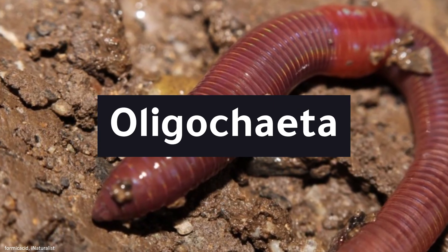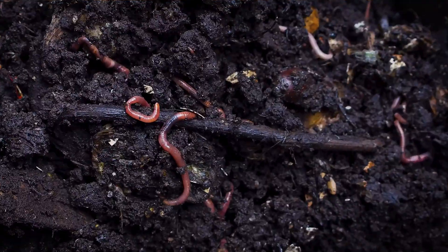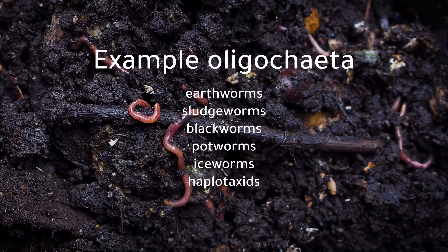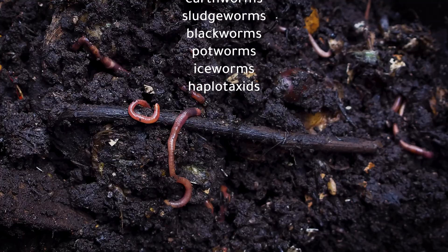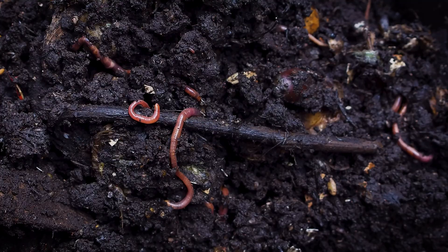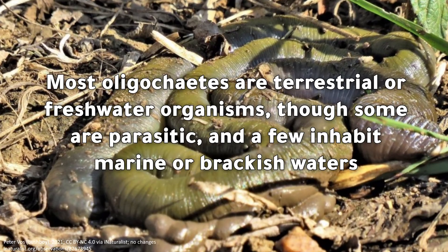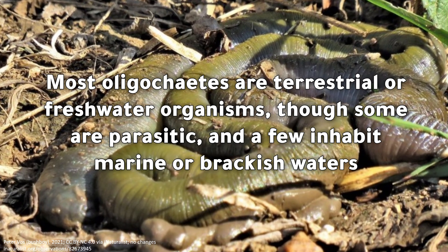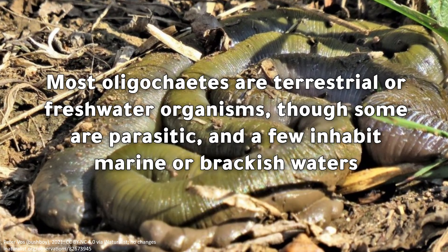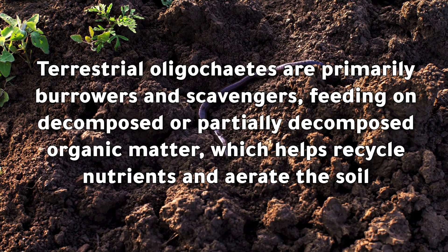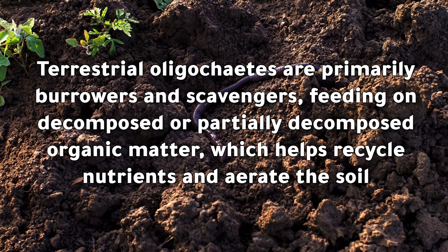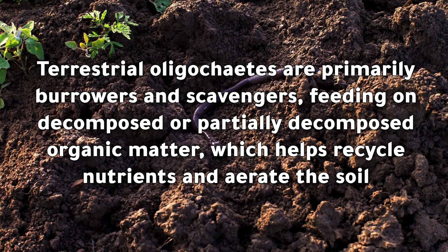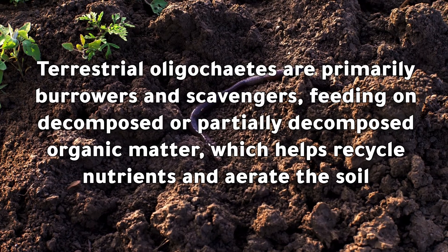Oligochaeta. The best-known oligochaetes are earthworms, but other examples include sludge worms, black worms, pot worms, ice worms, and haplotaxids. Most oligochaetes are terrestrial or freshwater organisms, though some are parasitic and a few inhabit marine or brackish waters. Terrestrial oligochaetes are primarily burrowers and scavengers, feeding on decomposed or partially decomposed organic matter, which helps recycle nutrients and aerate the soil.